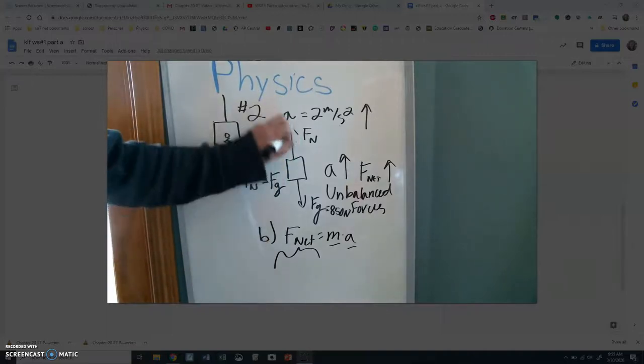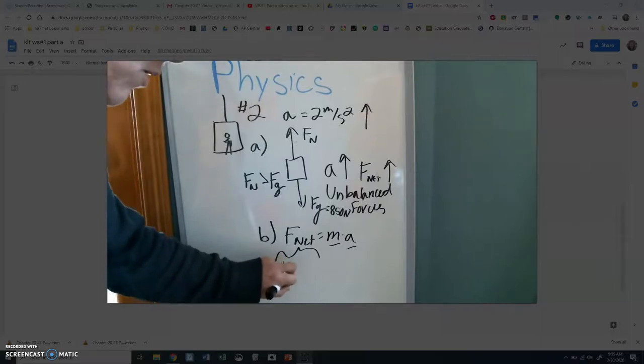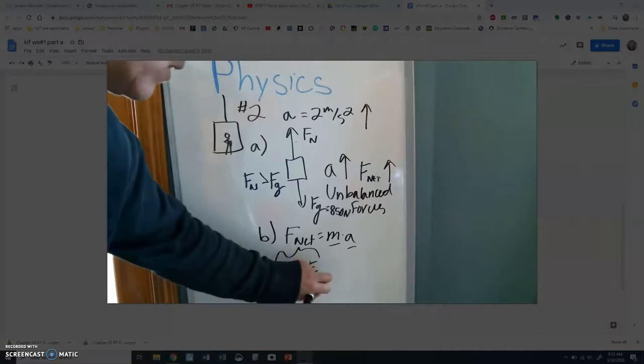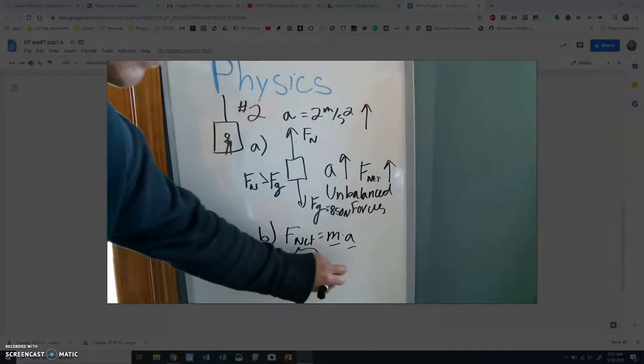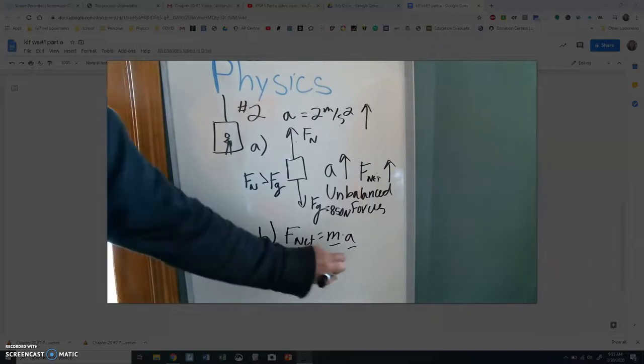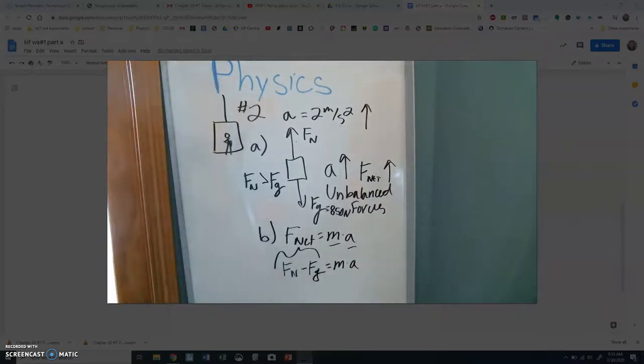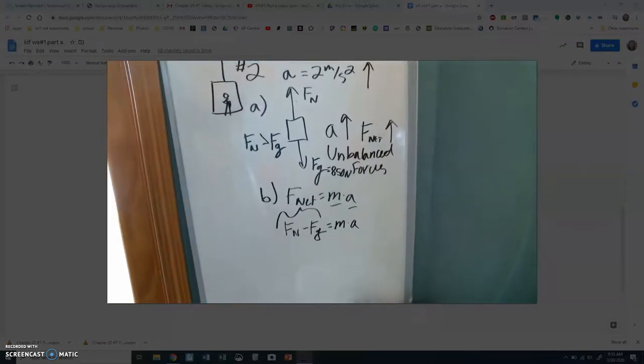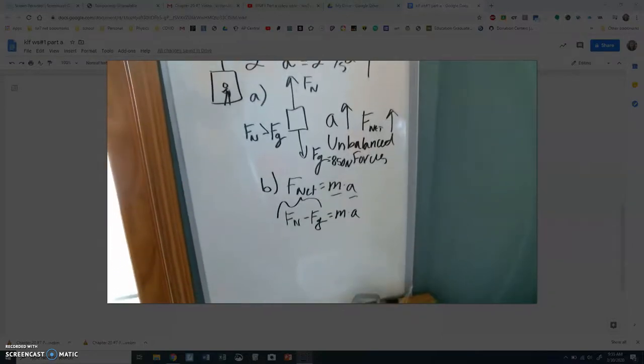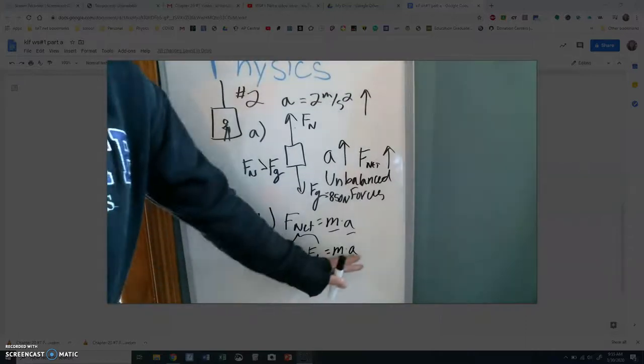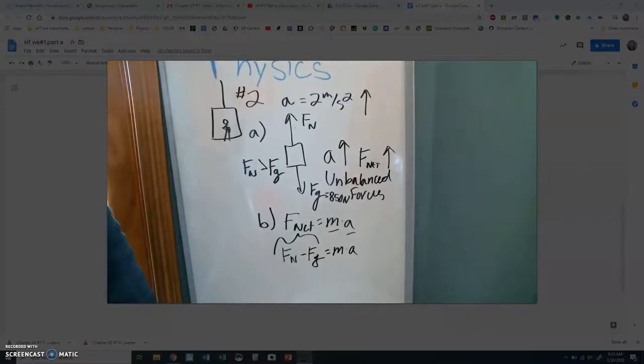I'm going to say up is positive, so force normal, that's our frame of reference. Down is negative, so force gravity is downward, so negative, equals mass times acceleration. I need to lower this, sorry. Just so we have some room. So right now, if we set this up, the rest of it is plugging what we know and doing the algebra.